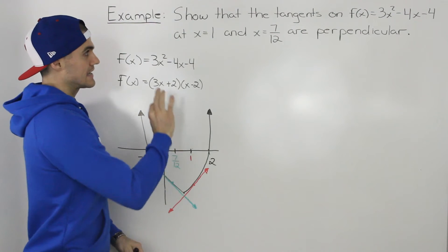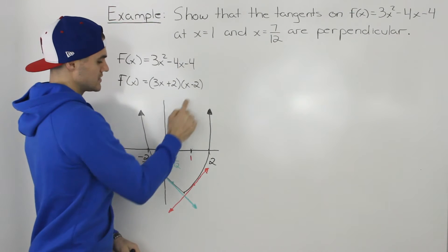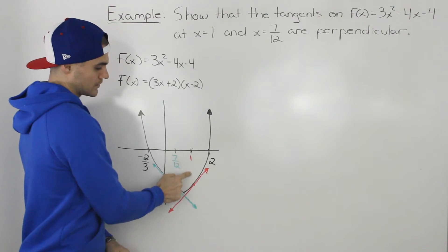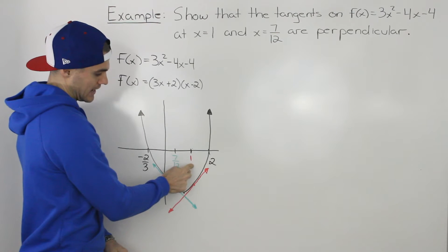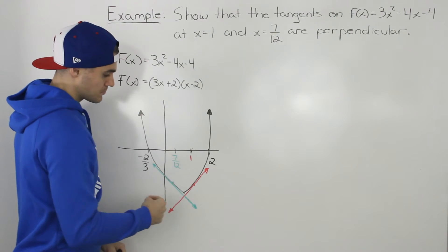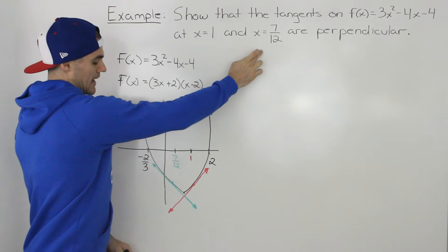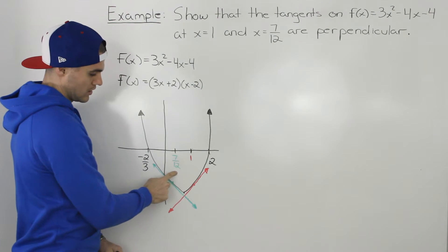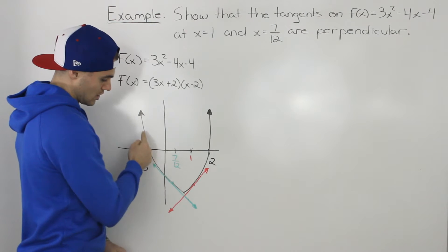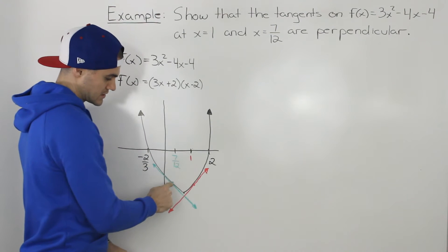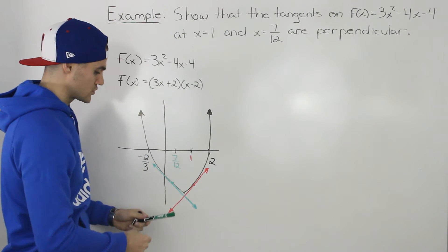So what we have to show is that the tangent on this function at an x value of 1, that's this red line here, is perpendicular to the tangent at an x value of 7 over 12, which is this tangent in green. This tangent in green is the tangent on this function f of x at an x value of 7 over 12.